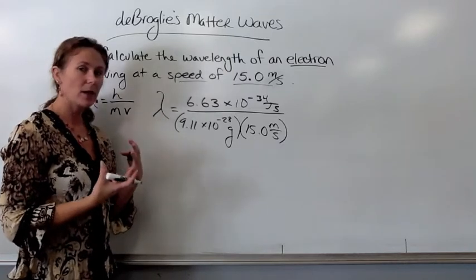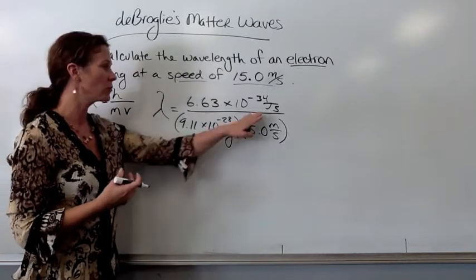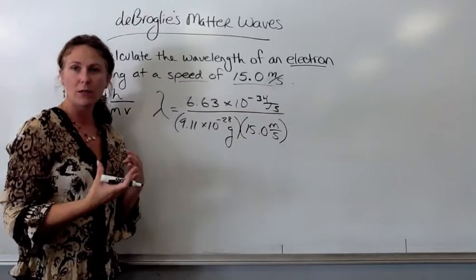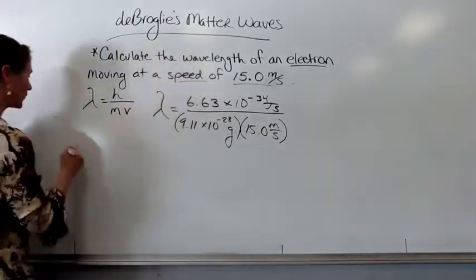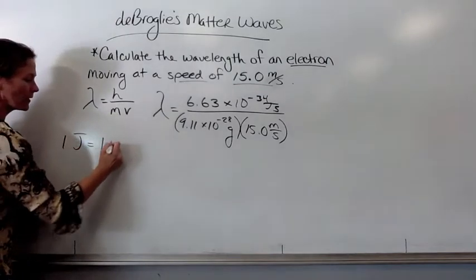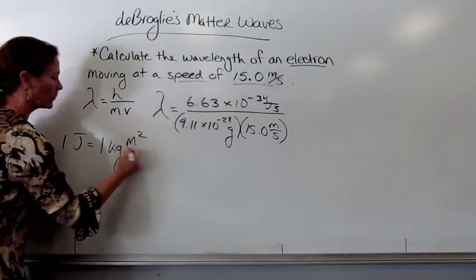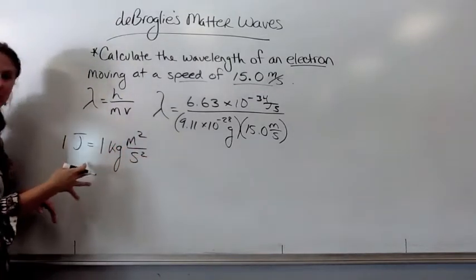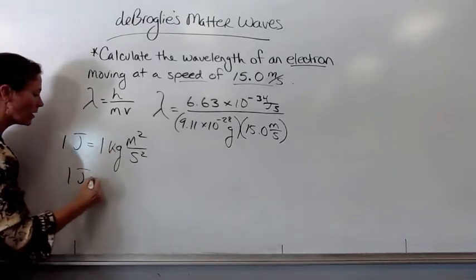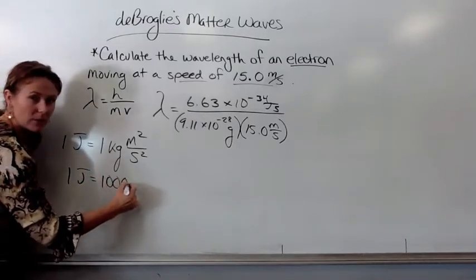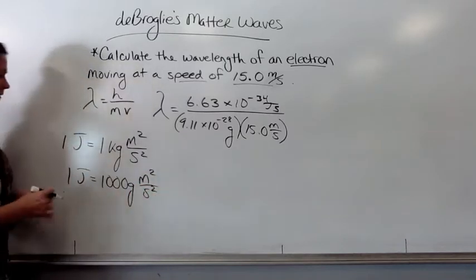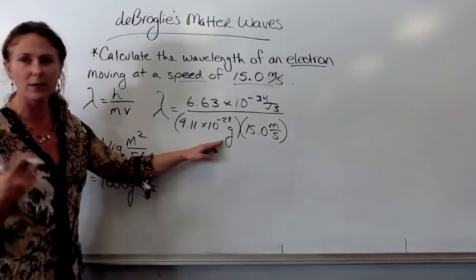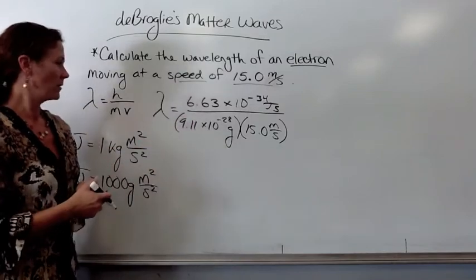So, knowing that, we need the relationship between joules and kilograms, meters squared per second squared. As a side note, one joule equals one kilogram, meters squared per second squared. And again, this is from your reference page. Also, we could say that it's 1,000 grams, meters squared per second squared. And since I have grams in my problem, that's what I'm just going to use so I don't have to do too much converting.